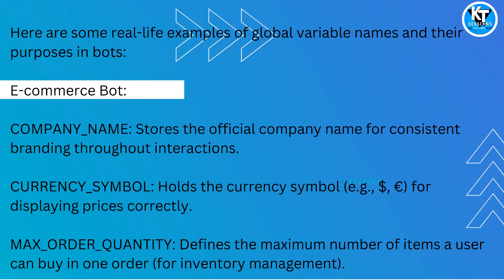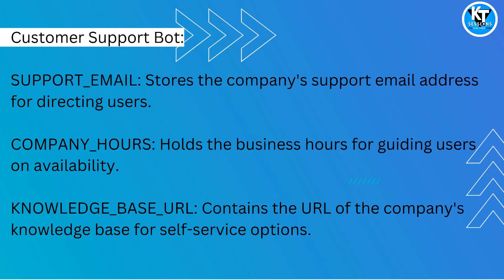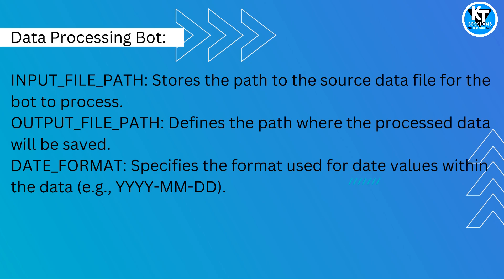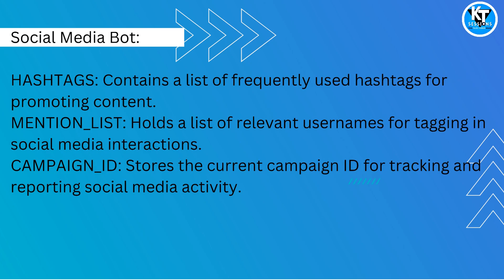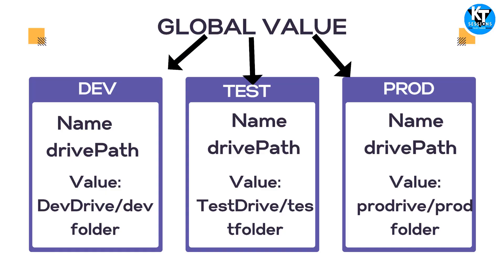There are a lot of things we can save in global values, like the path of an application, folder, or drive. For example, if we are working in a dev environment, we have a specific drive path used across many bots. If we use a global variable, in the test environment we can give the test shared drive path, and in dev we give the dev shared drive path. Similarly, the path of any application can be saved in global variables, covering many common variables shared across bots.